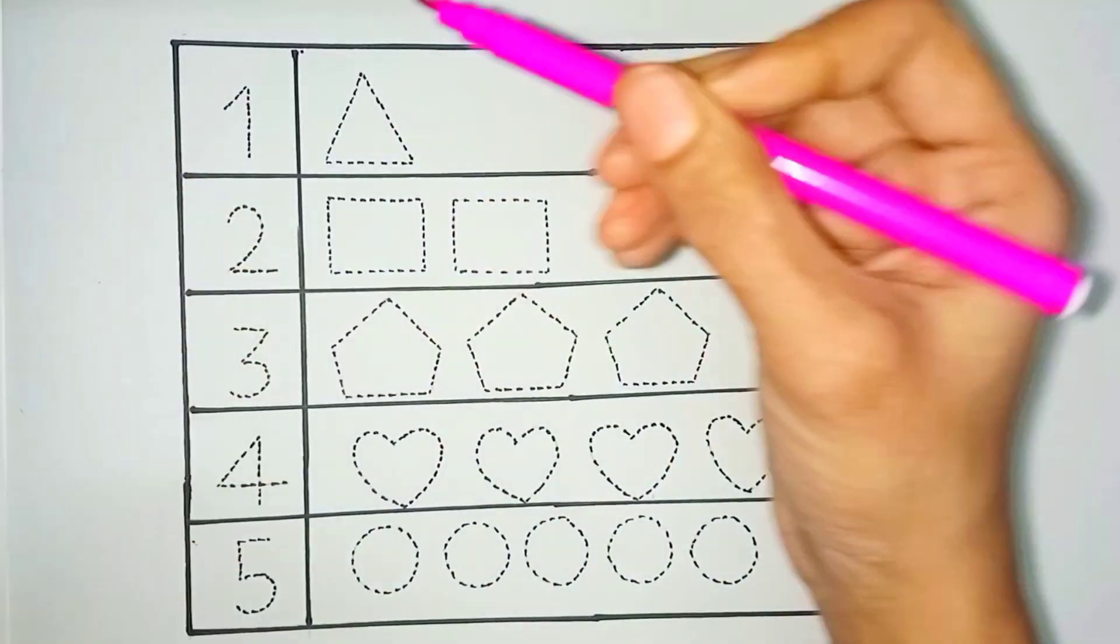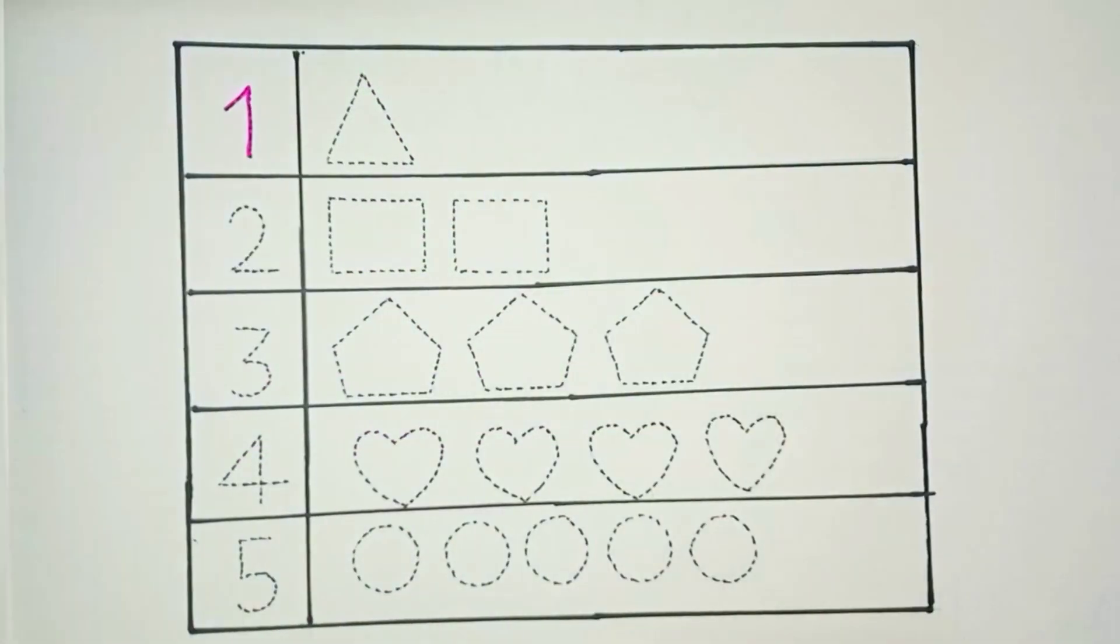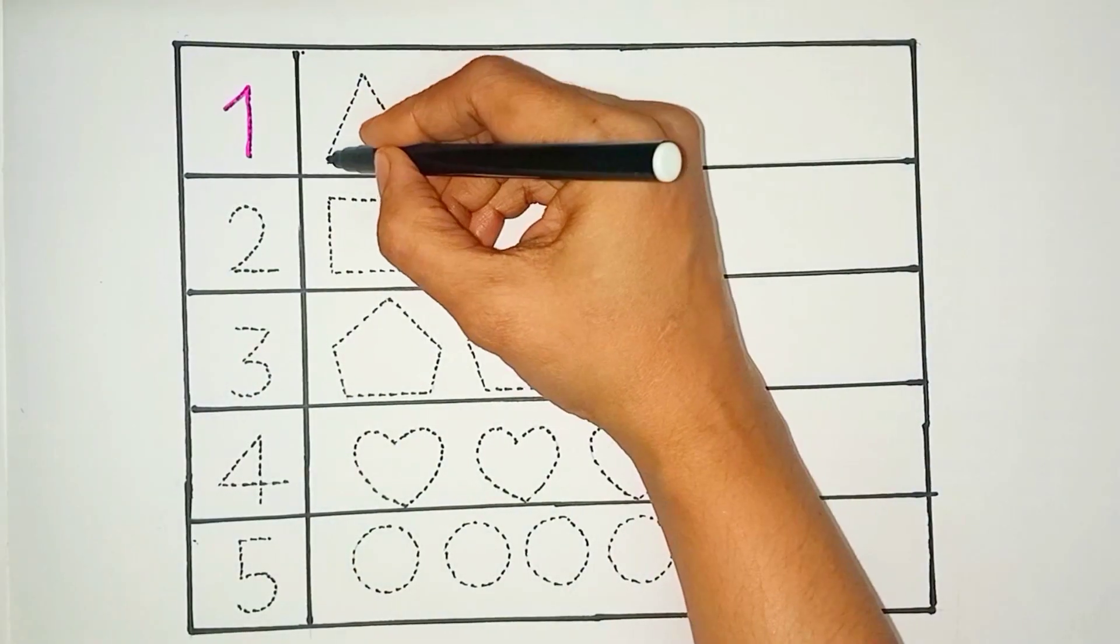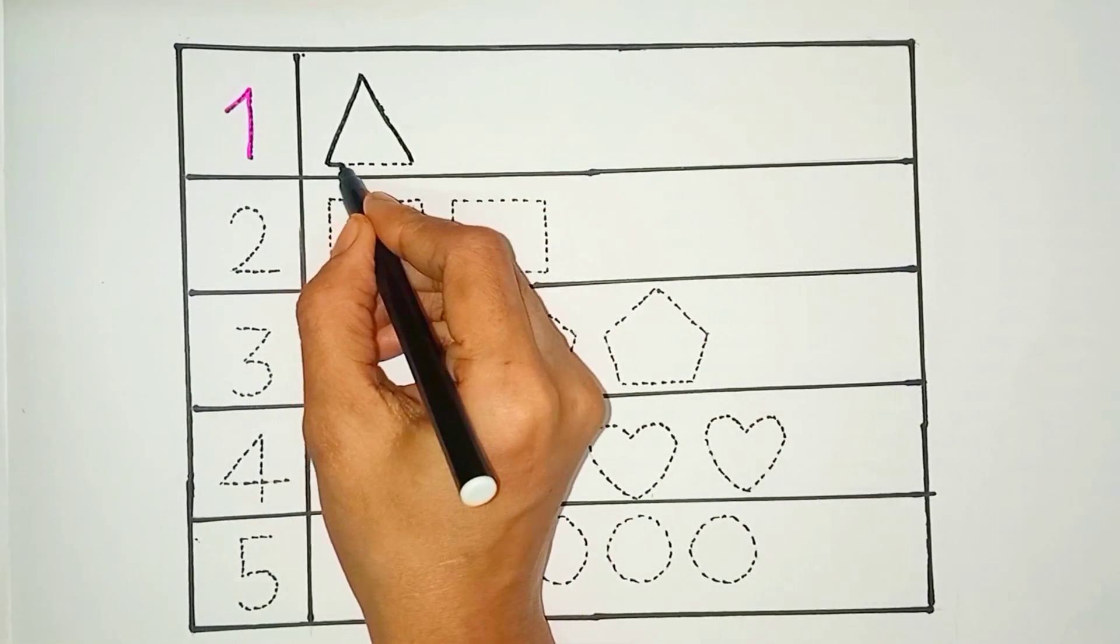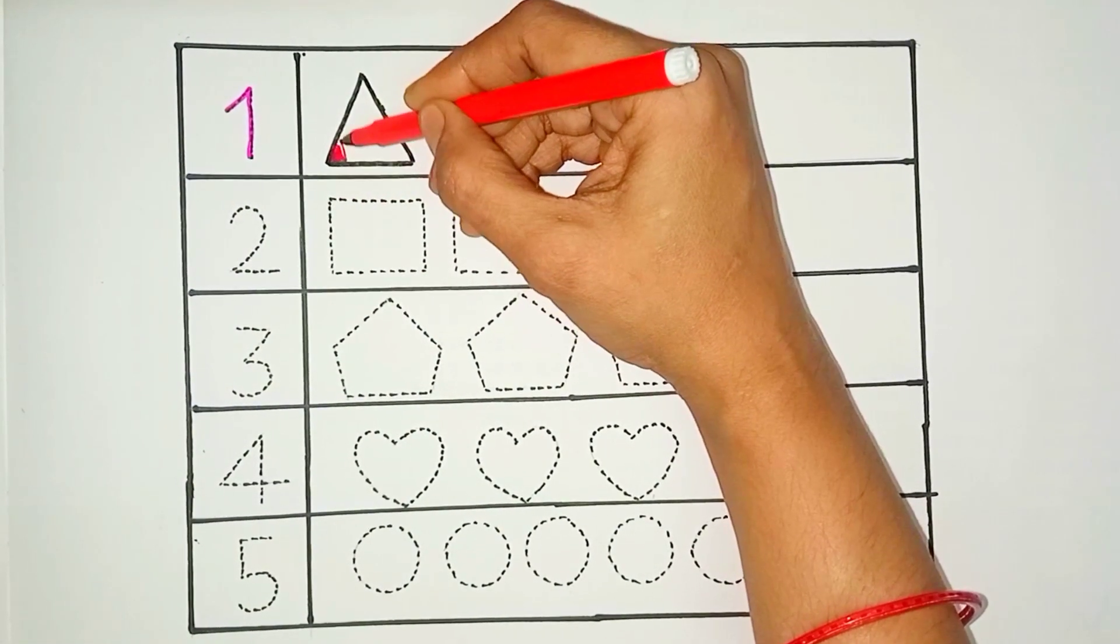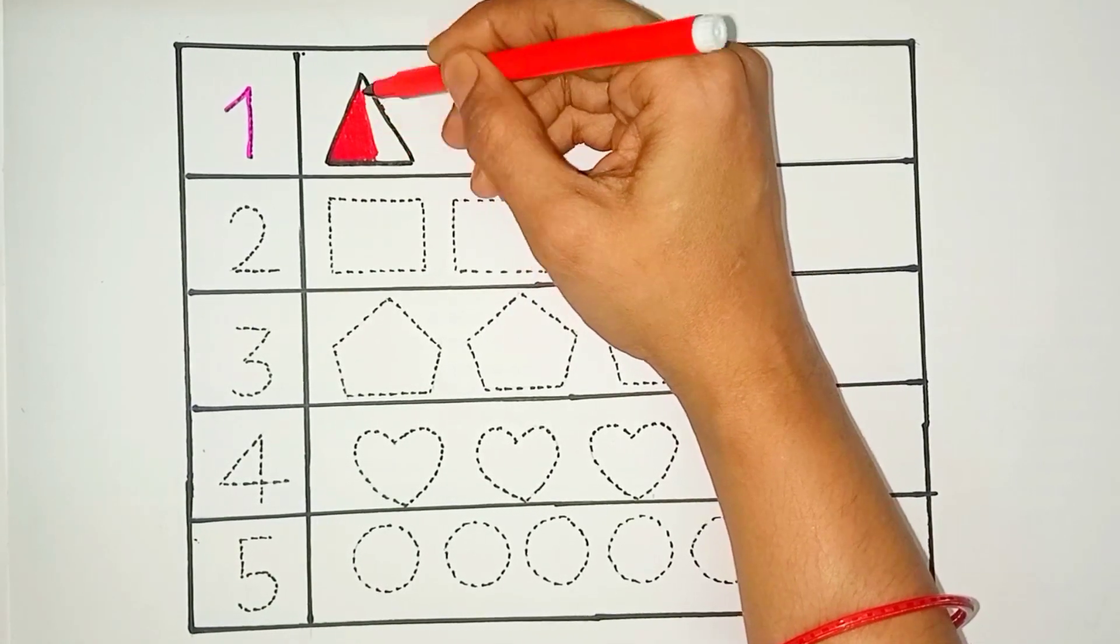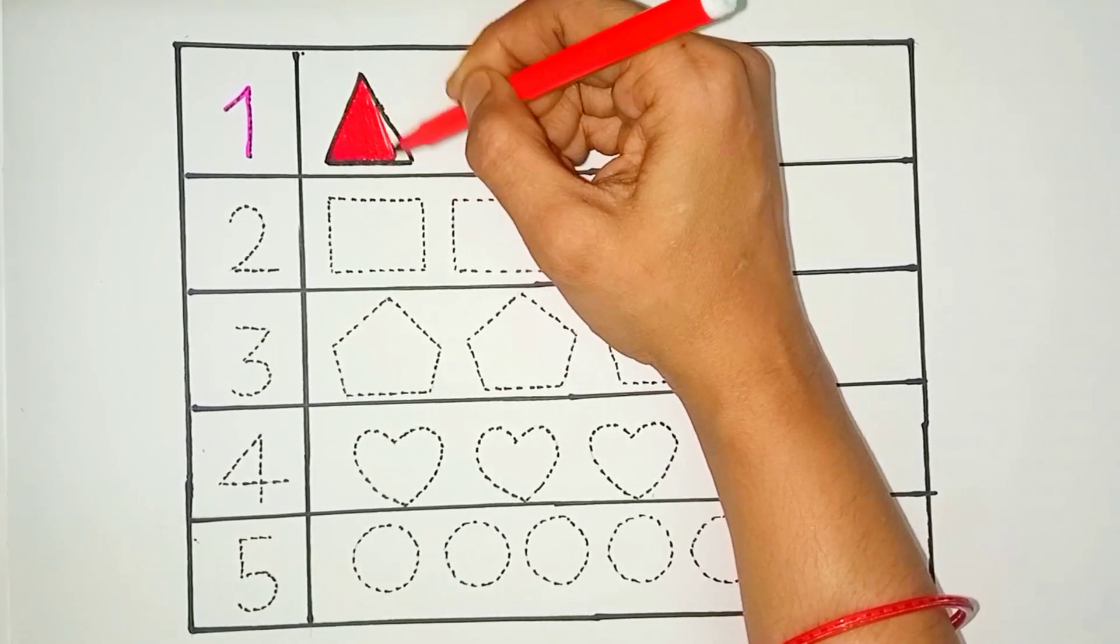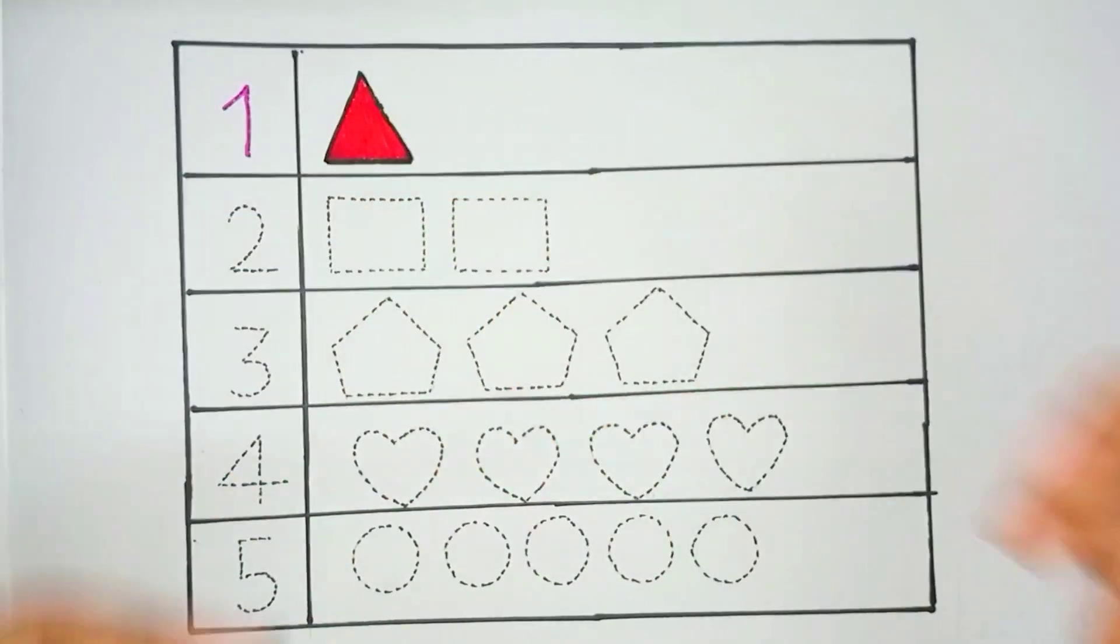Let's learn numbers with shape. One, triangle, red color, one triangle.